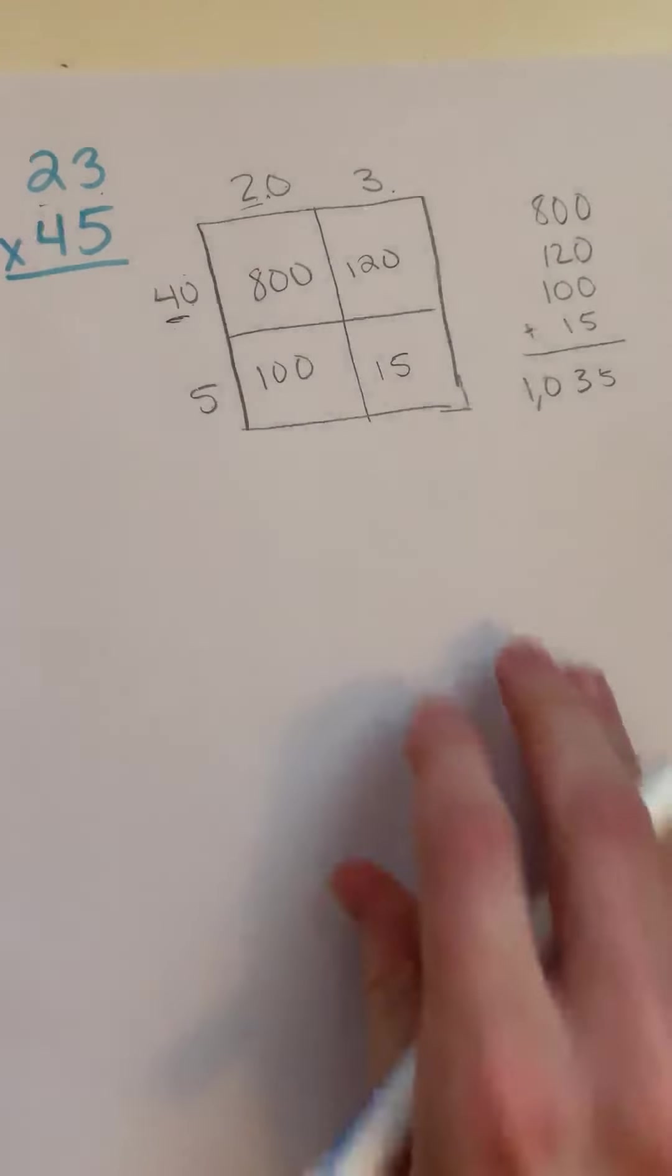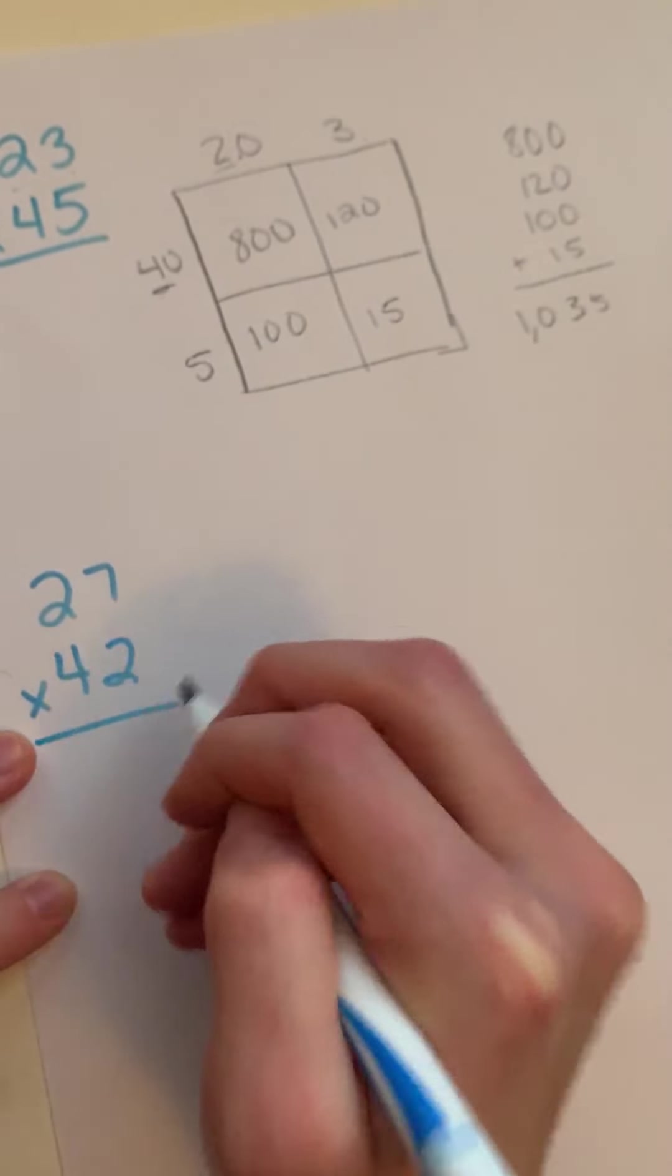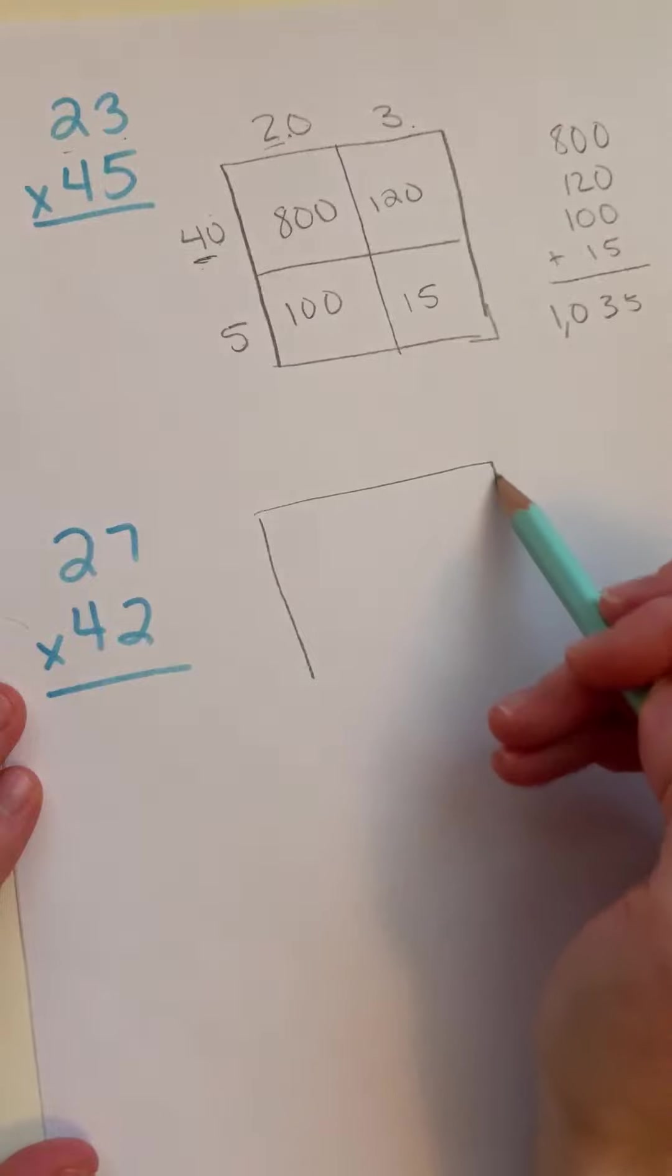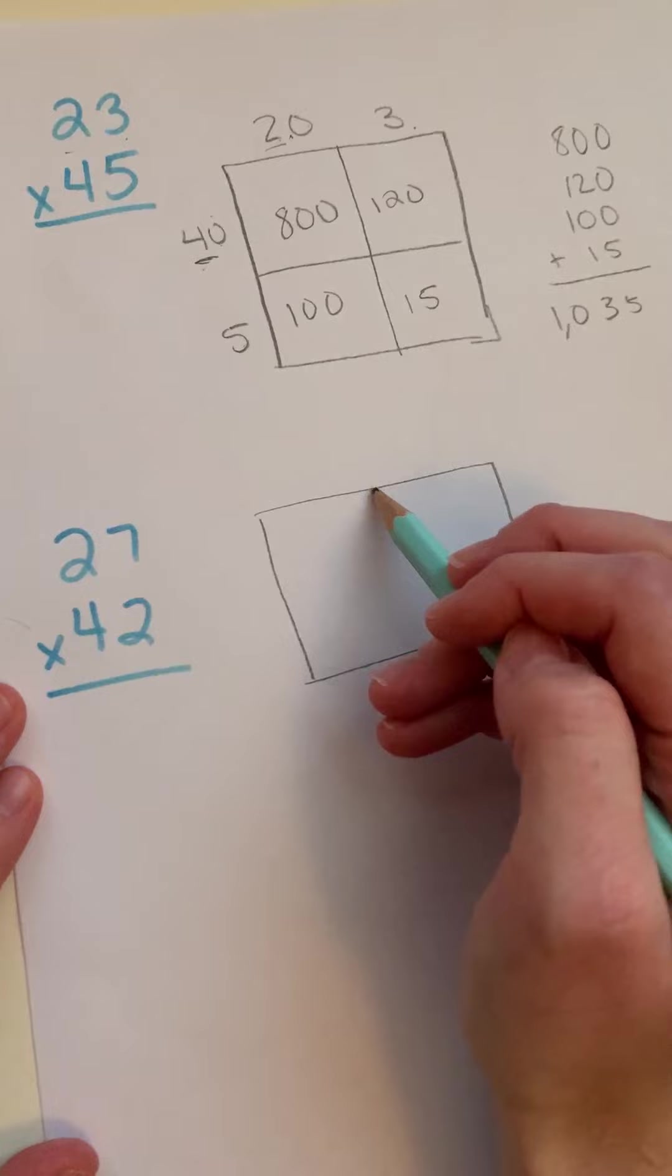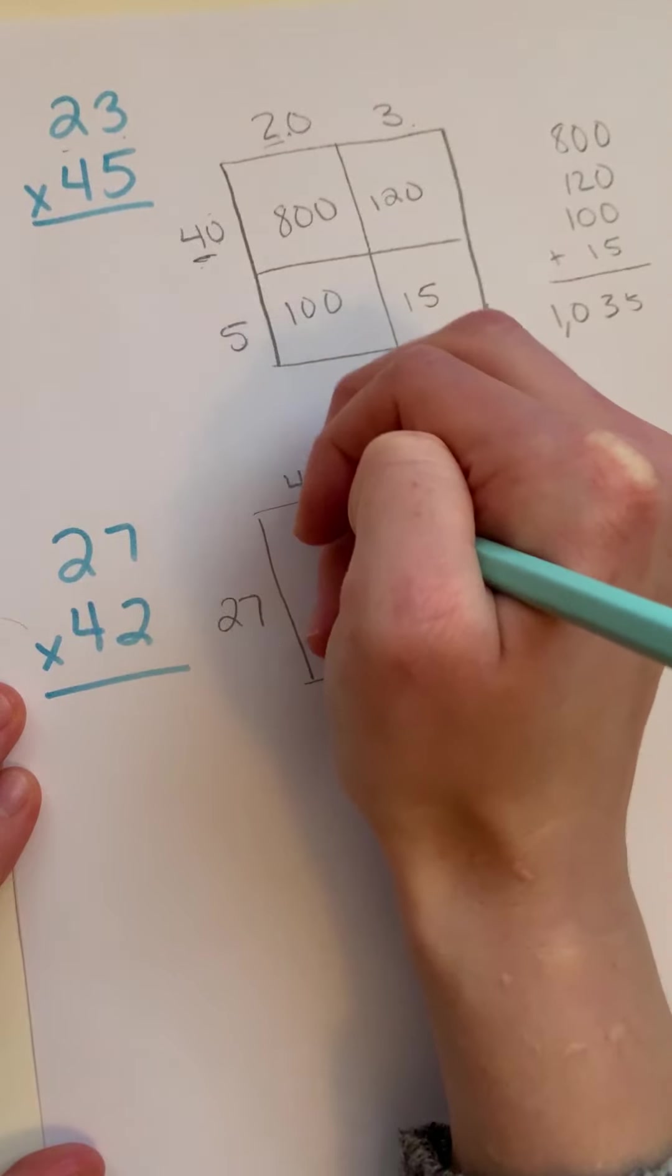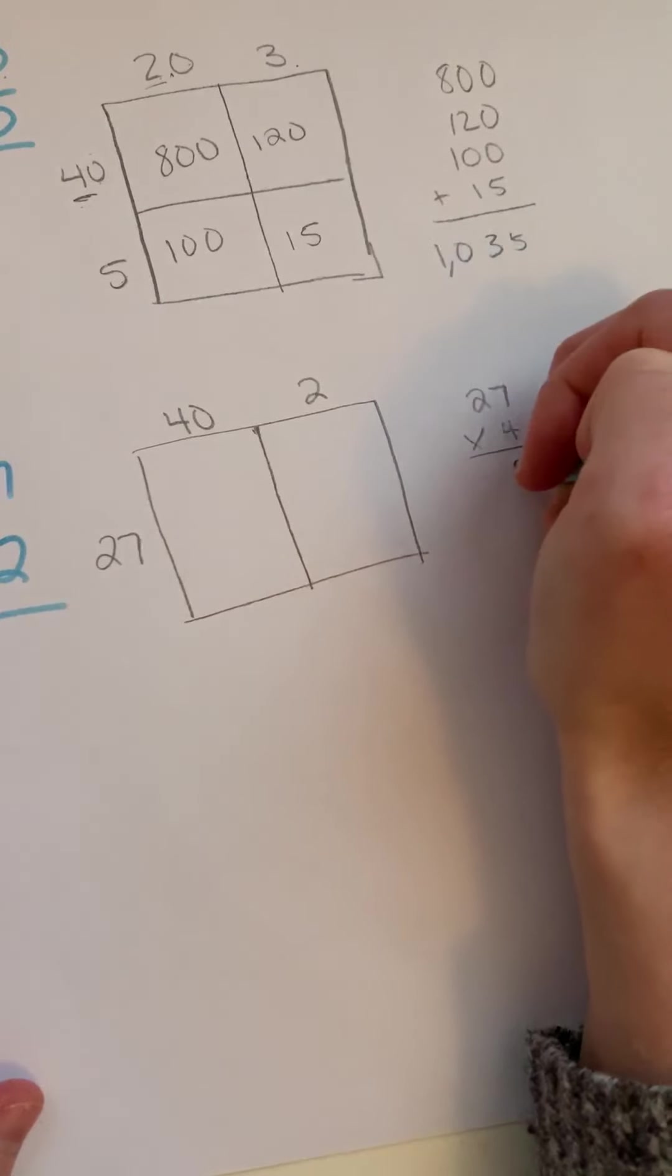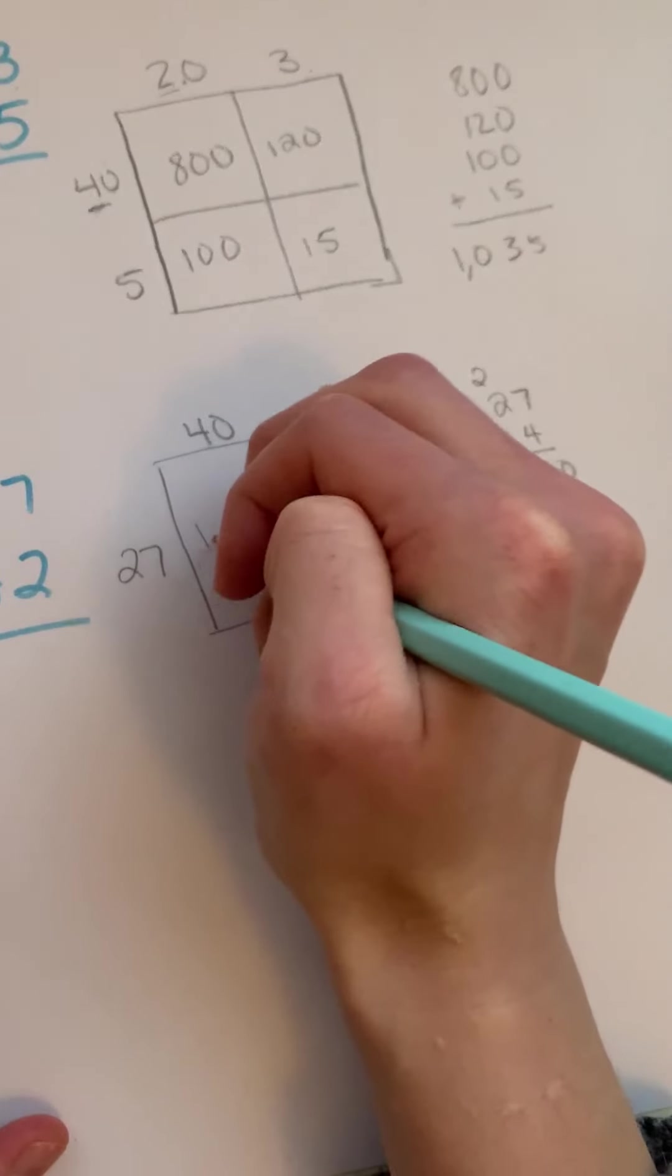Another way that you've been shown is to kind of make a box that is in two parts instead. So we have a 27 times a 40 and a 2. And how we're approaching this is doing 27 times 4. 7 times 4, 28, 108. And then tacking on a 0 at the end, 1080.